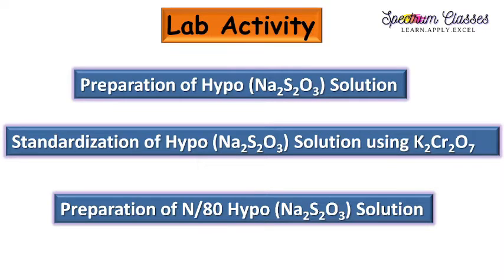Hello everyone, welcome back to Spectrum Classes. This is my lab activity video and in this lab activity video I am going to discuss the preparation of sodium thiosulfate solution or hyposolution. This hyposolution is very important for iodometric and iodimetric titrations. We are going to discuss the preparation of hyposolution and its standardization using K2Cr2O7 solution. I will also show you the lab activity and at the end of this video I am going to discuss how to prepare N by 80 hyposolution from the stock solution of N by 10 hyposolution, because that N by 80 hyposolution is used for the determination of dissolved oxygen. So let's start with the video.